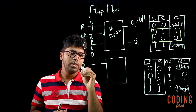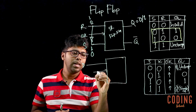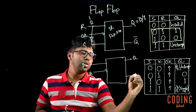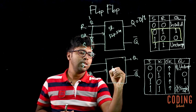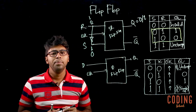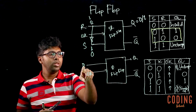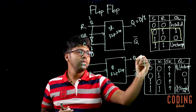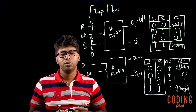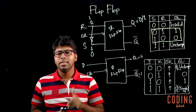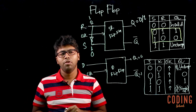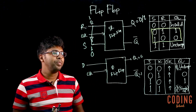The D flip-flop takes an actual input and a clock pulse. For the D flip-flop, we look at the possible input and output combinations. The output after the clock pulse is saved based on the input data.